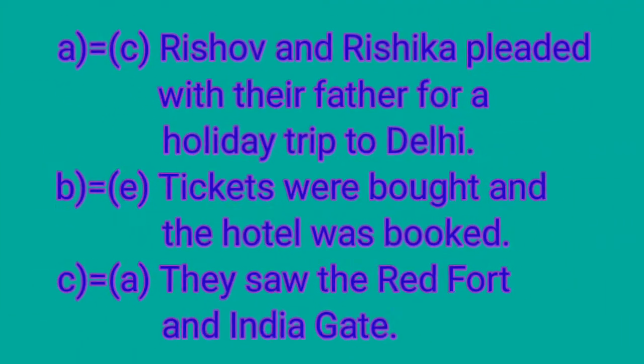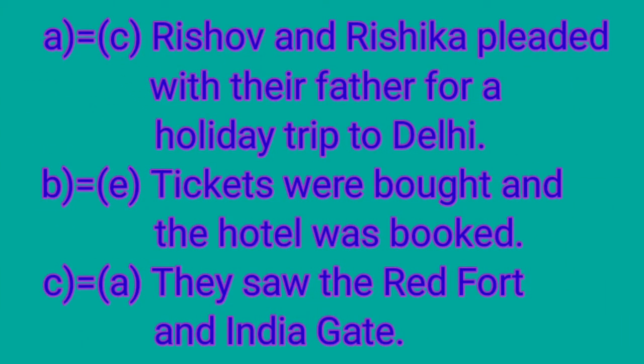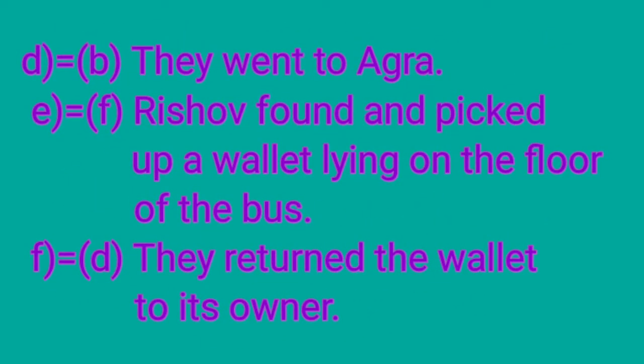If we rearrange the sentences in chronological order: number 1 is C, number 2 is E, number 3 is A, number 4 is B, number 5 is F, and number 6 is D. So: number 1 — Rishabh and Rishika pleaded with their father for a holiday trip to Delhi. Number 2 — tickets were bought and the hotel was booked. Number 3 — they saw the Red Fort and India Gate. Number 4 — they went to Agra. Number 5 — Rishabh found and picked up a wallet lying on the floor of the bus. Number 6 — they returned the wallet to its owner.